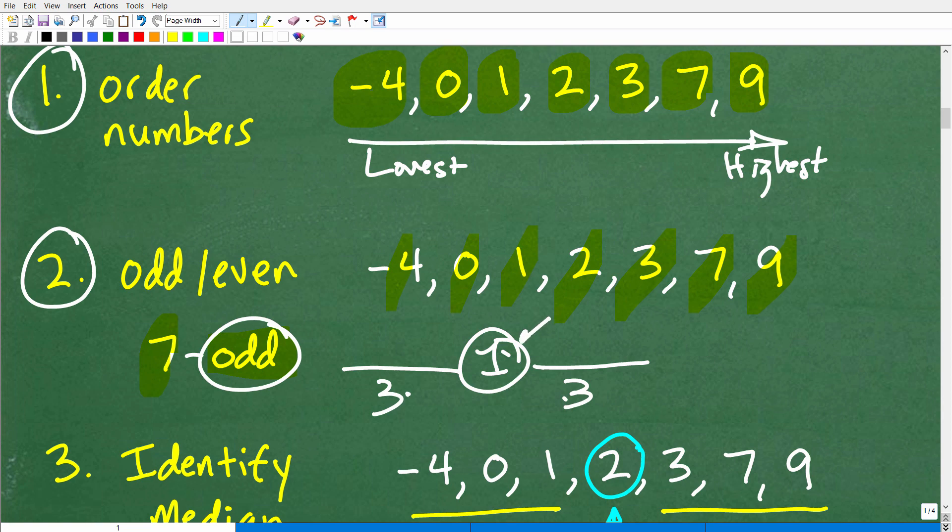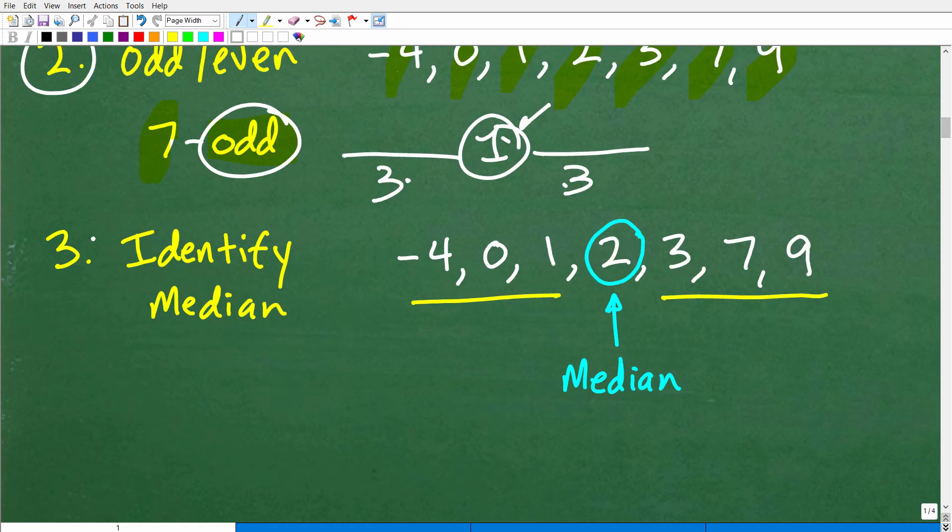So that middle number, we won't have to find the average to find the median. So the last step is to identify the median. So we have our list written from lowest to highest. We're going to have three numbers over here, three numbers over here. And you can see that middle number is two. So that is the median.